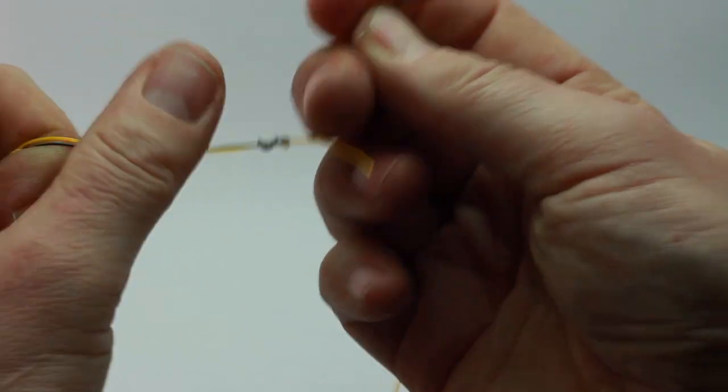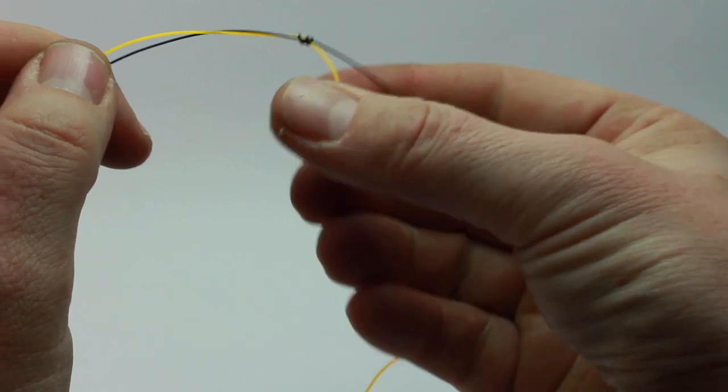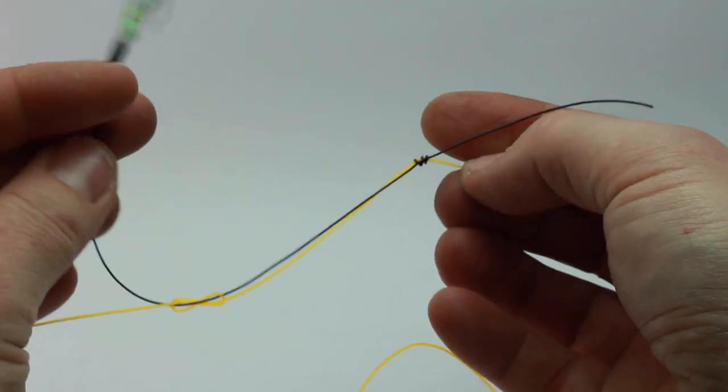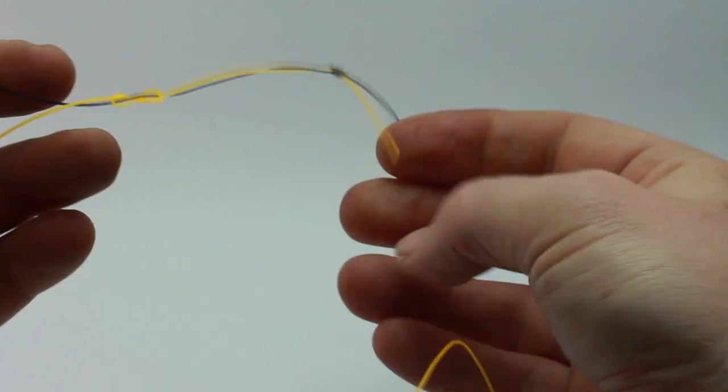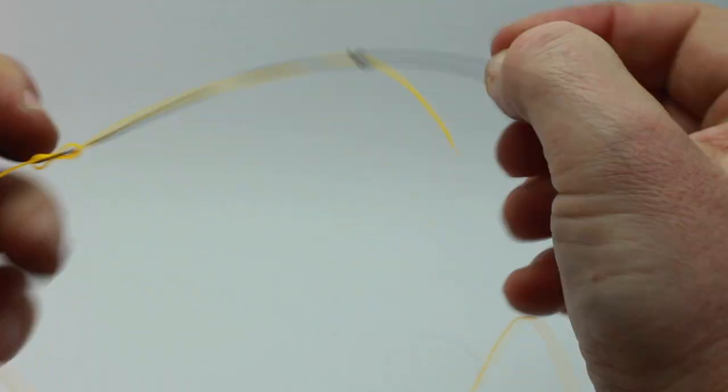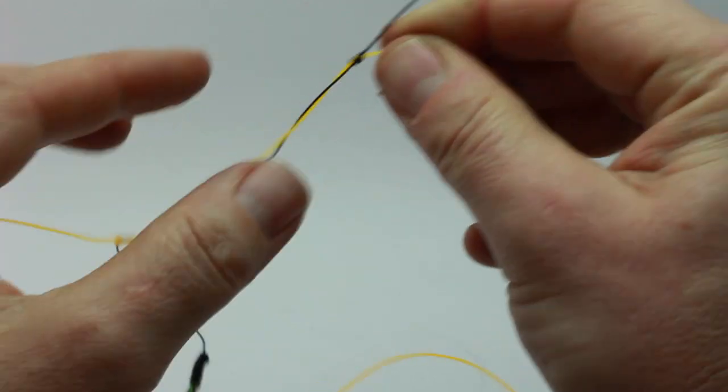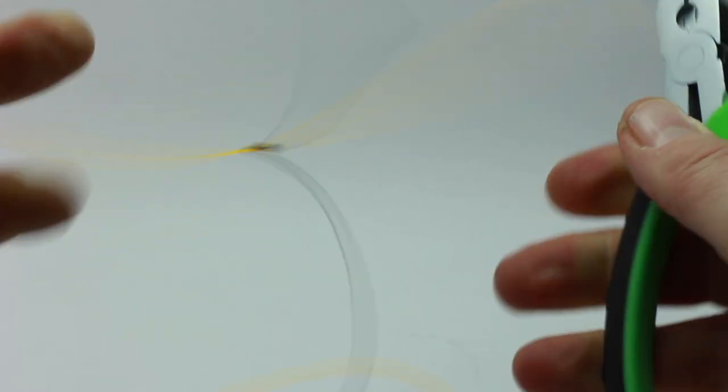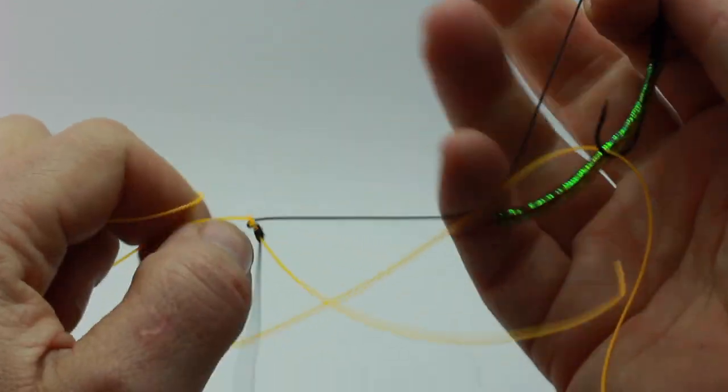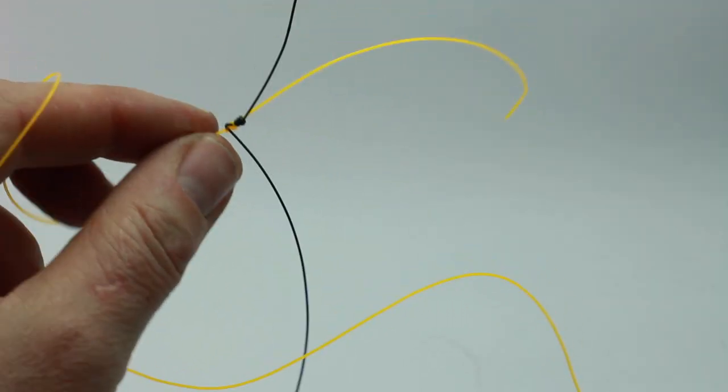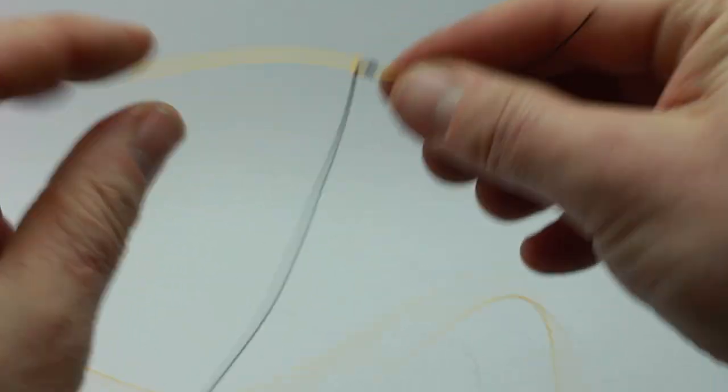Then you're pulling the black line through, and you want to close up the knot on the yellow line as well, so it looks like that. Always moisten it and then trim, and that's it. You can use that knot for all sorts of droppers, multi-hook rigs, but I use that for the feathers.